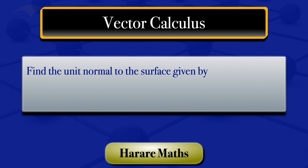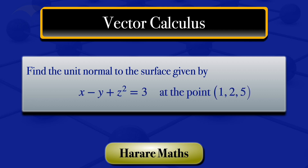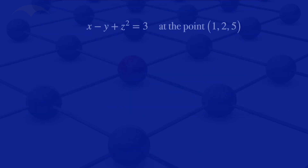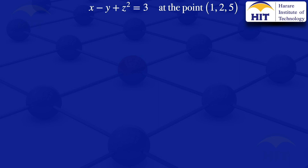In this video, I'm going to find the unit normal to the surface given by the equation x minus y plus z squared equals 3 at the point (1, 2, 5). To find the unit normal, I would have to use the properties of the gradient of a scalar field.